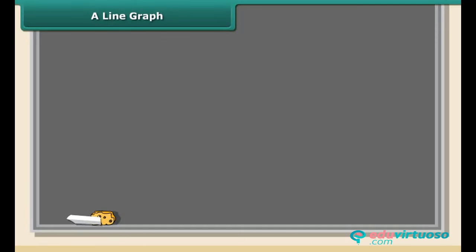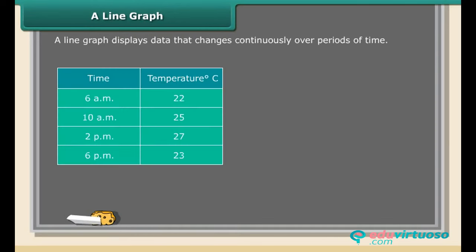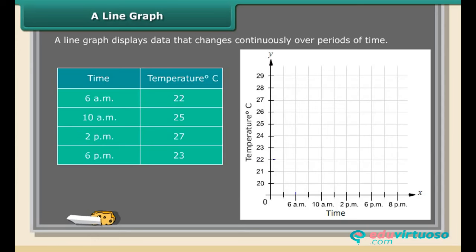A line graph: A line graph displays data that changes continuously over periods of time. The above table shows the temperature of Chennai City, taken every four hours for a day. We call this as time temperature graph. The horizontal line x-axis shows the timings at which the temperatures were recorded. The vertical line y-axis denotes the temperature. The temperature of every four hours is recorded and plotted as points as shown in the graph. These points are connected by line segments. The result is line graph.